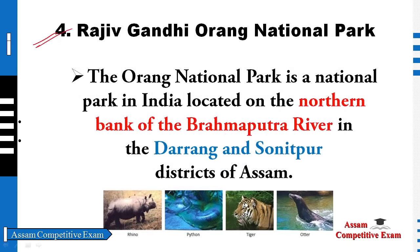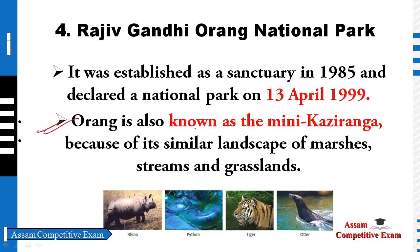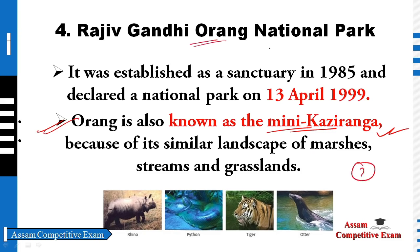The second national park is Rajiv Gandhi Orang National Park. The first one was a wildlife sanctuary. In 1999, the National Park was declared, and the name is Rajiv Gandhi Orang National Park. The district is located in Darrang and Sonitpur district. The important thing is that the Orang National Park is a mini-Kaziranga. Which national park is a mini-Kaziranga? Rajiv Gandhi Orang National Park.